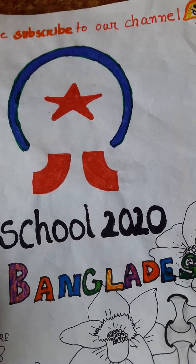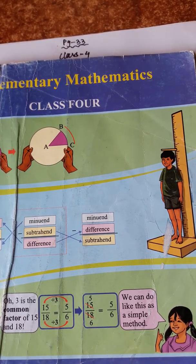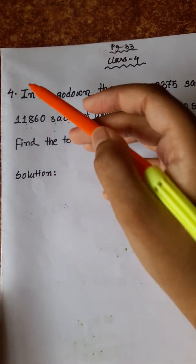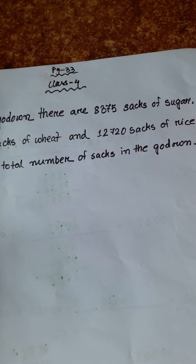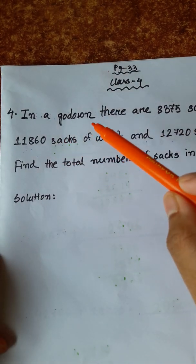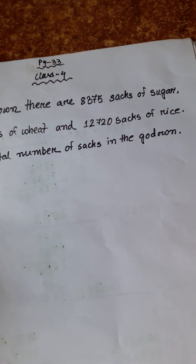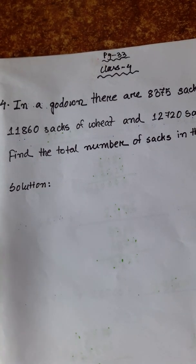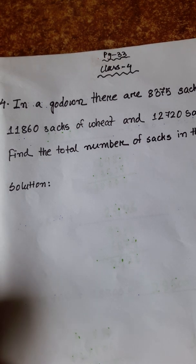Welcome to School 2020 at Camera Elementary Mathematics, Class 4, Chapter 2, Word Problems. Our first word problem is number 4, page 33. In a godown there are 8,375 sacks of sugar, 11,860 sacks of wheat, and 12,720 sacks of rice. Find the total number of sacks in the godown.